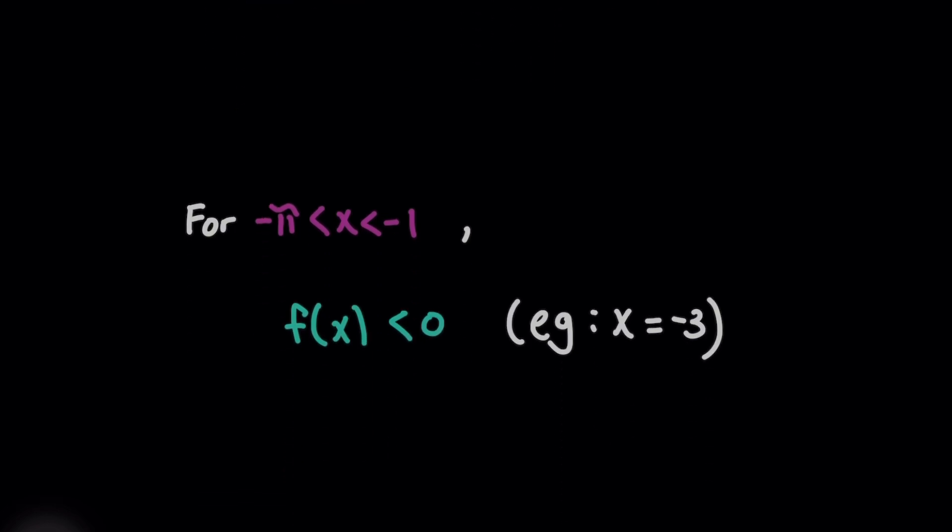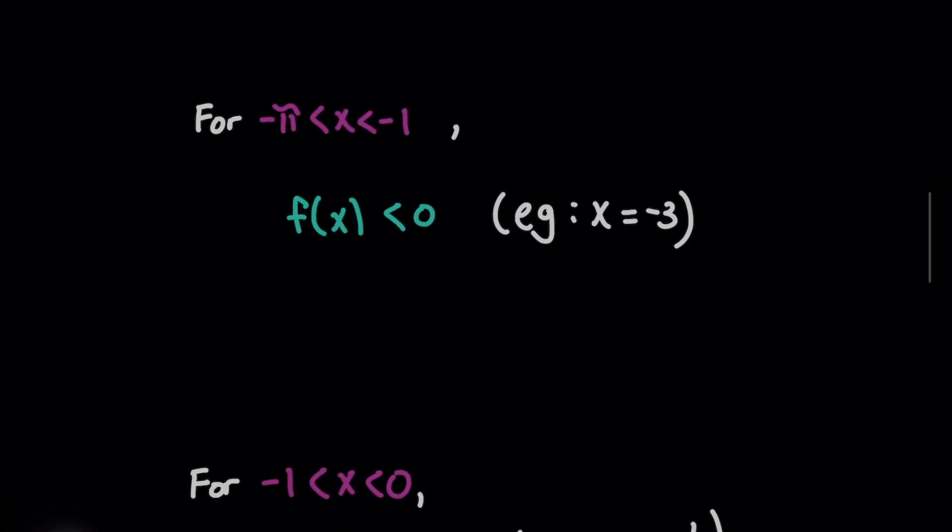So you start with your lower limit of integration here, negative pi, because it's the left-most side of the intervals. And then I'm going to take my most negative root that I found above, negative one. And so I'm going to look at this interval and just choose one sample value inside of it to test. I'll go with negative three because it's easy to work with. And when I plug it into the original function f of x, we'll see that it's less than zero.